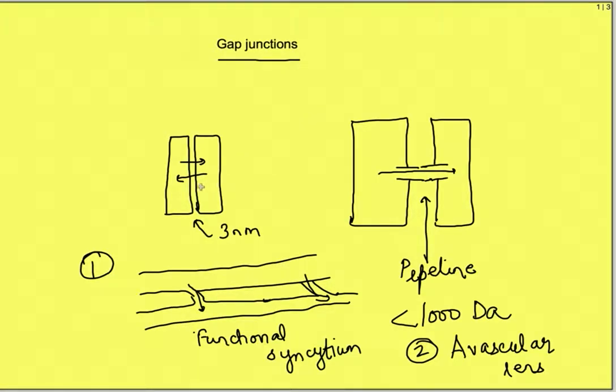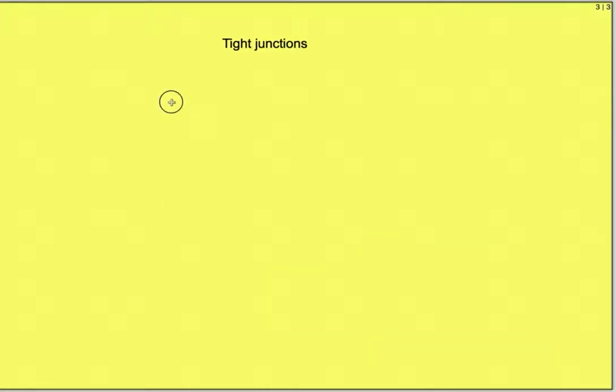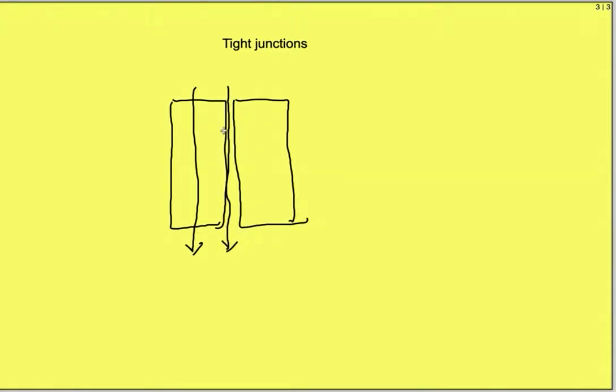Another junction type is tight junctions. We know that specialized transport processes exist for transport of substances across the membrane of cells but why are substances not able to cross in between the cells by paracellular path? This happens due to presence of tight junctions at the apical membrane in between two cells. This prevents paracellular transport of substances and allows only transcellular route.